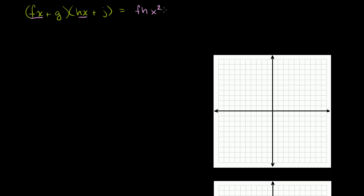That times that is fhx squared. And then the rest of it I had gotten right: fx times j gives plus fjx, then g times hx gives plus ghx, and finally g times j gives gj. I apologize for that error — I had forgotten to write the exponent there and in the step after that. But it didn't change the argument for the proof, so I just want to make that quick correction in case it confused anyone.